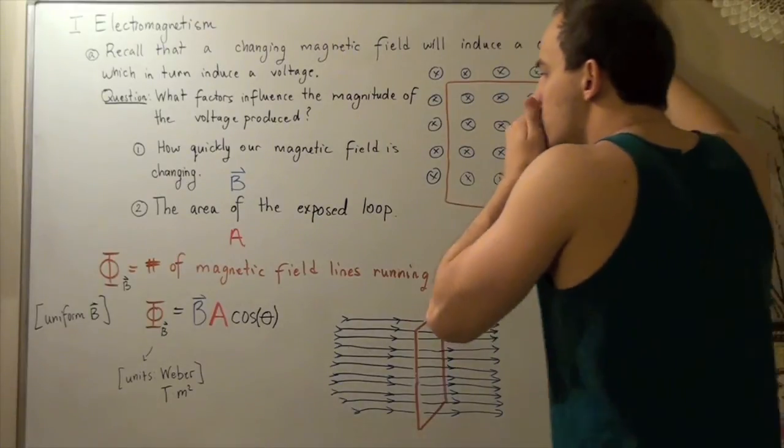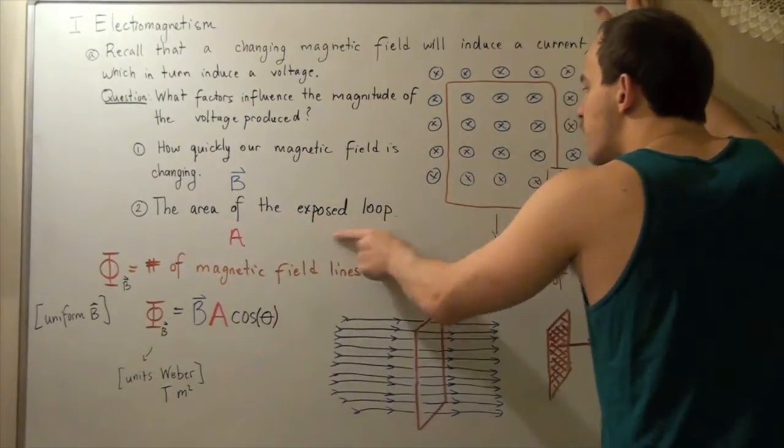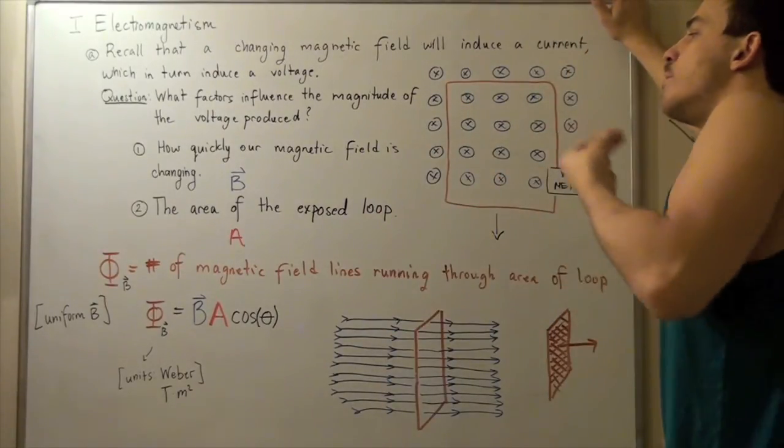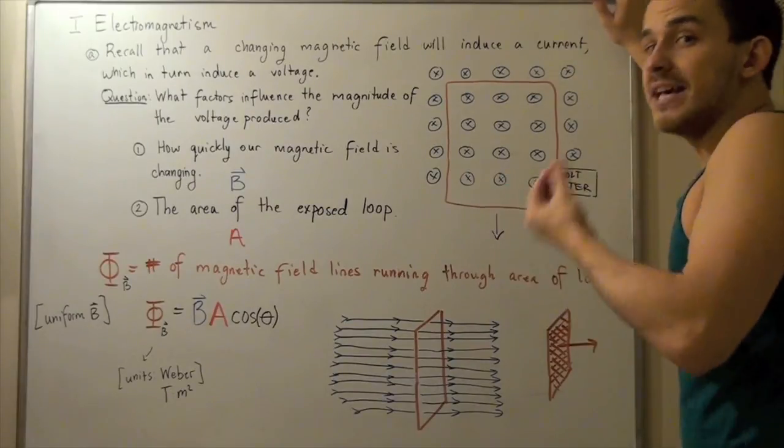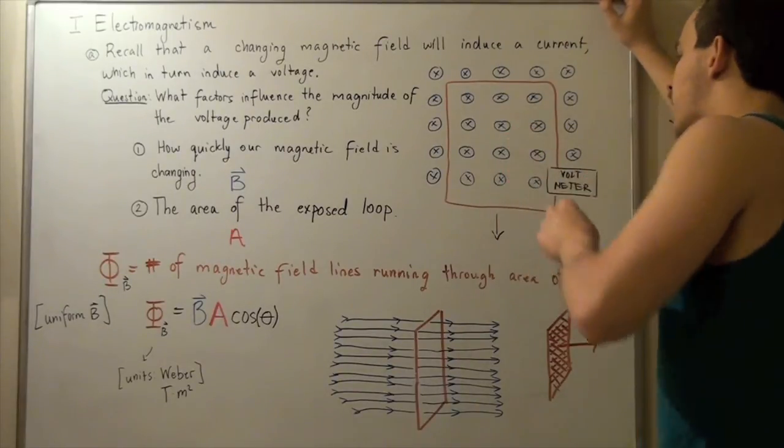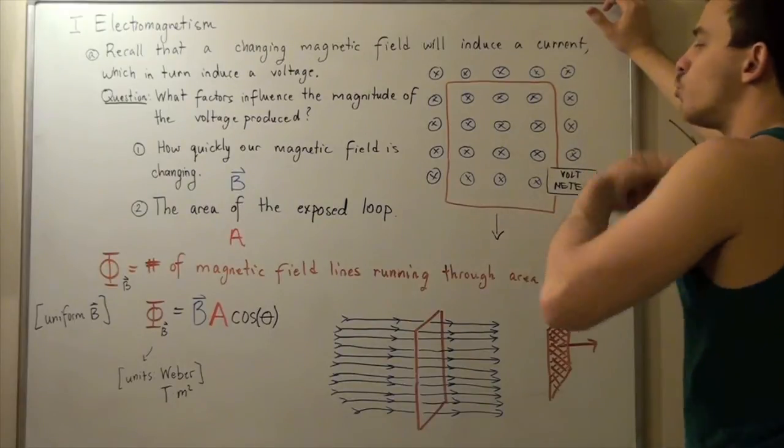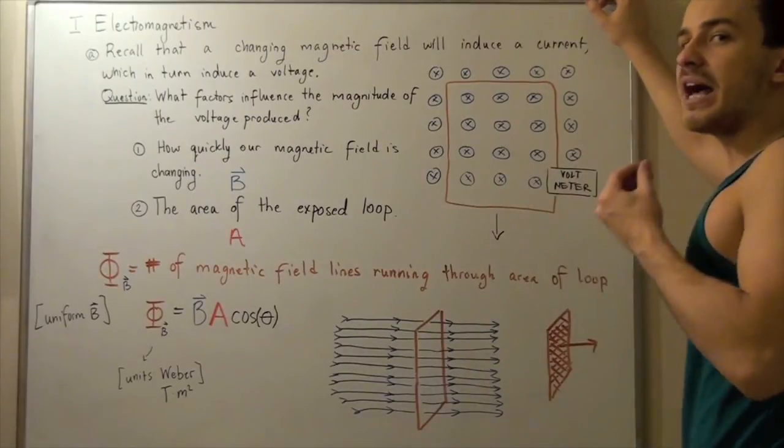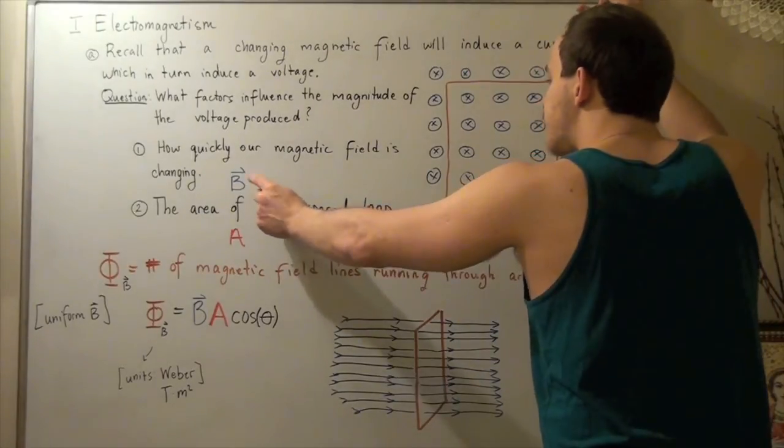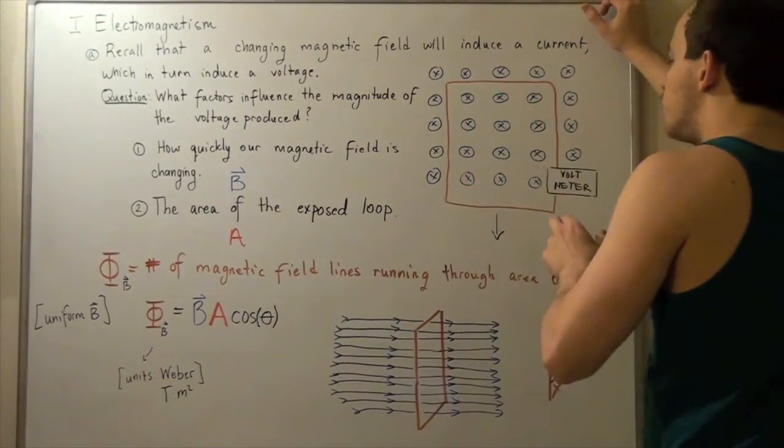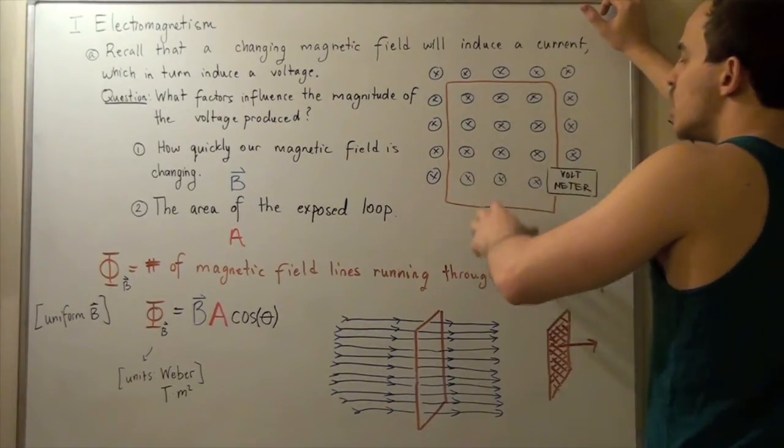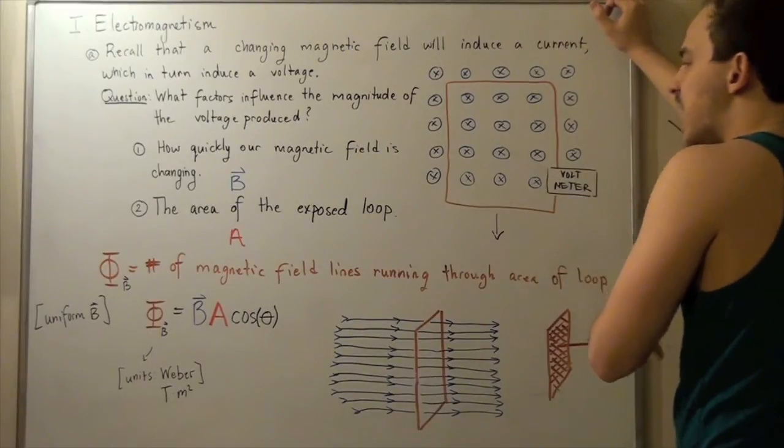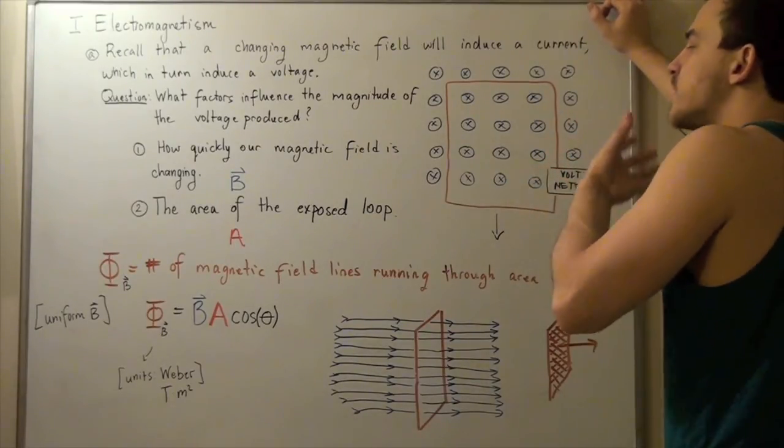He said that if I increase the area of my exposed loop, I will be able to incorporate more field lines, more magnetic field lines, into my loop. And that means my voltmeter will read a higher voltage. Likewise, if I keep my area the same, but I increase the number of field lines found inside my loop, if I go from 12 of these guys to 24 of these guys, my voltage read will also increase. And he saw these results experimentally.